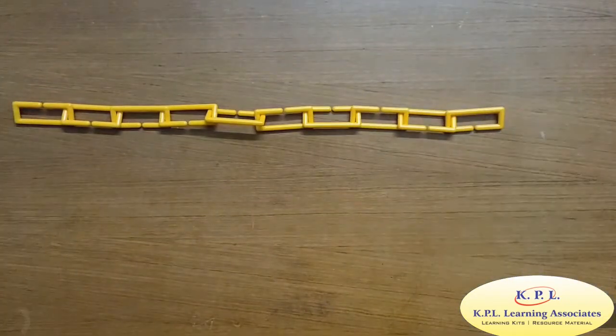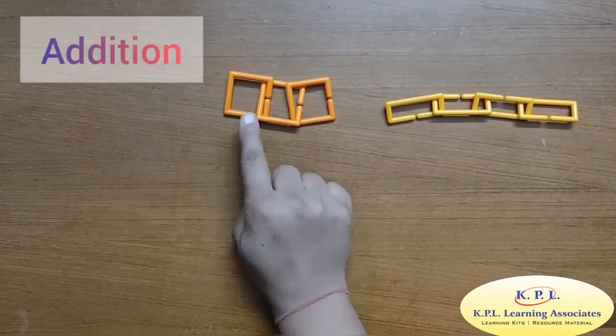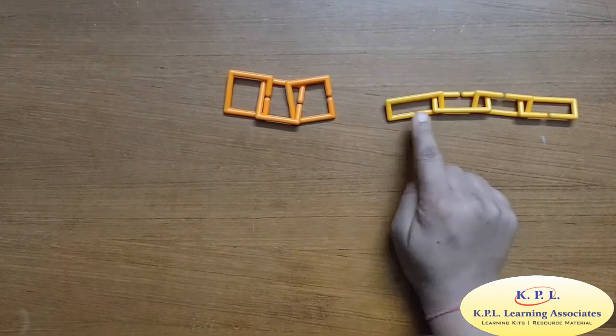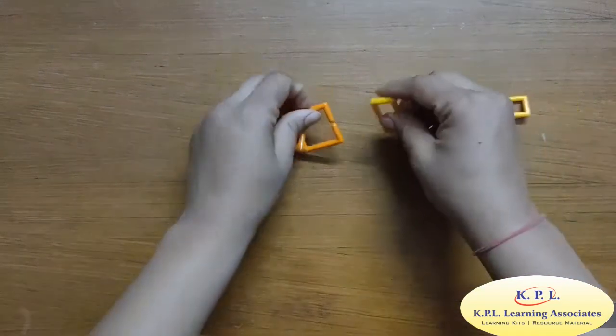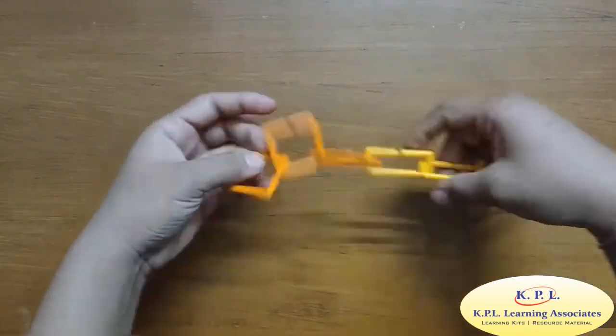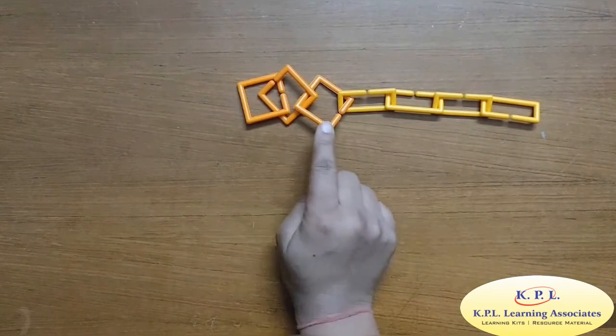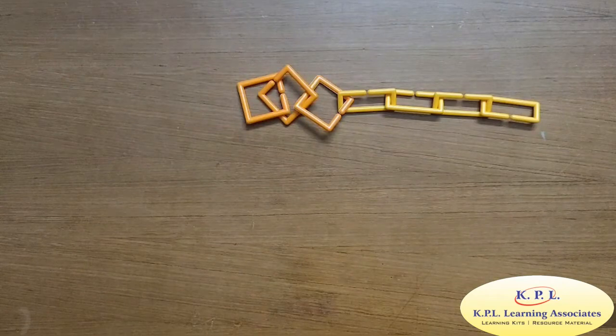We can do some more mathematical concepts with this. Addition. Here I have 1, 2, 3, 3 squares and 1, 2, 3, 4, 4 rectangles. Let us connect them. How many clips do I have now? 1, 2, 3, 4, 5, 6, 7. I have 7 clips now.